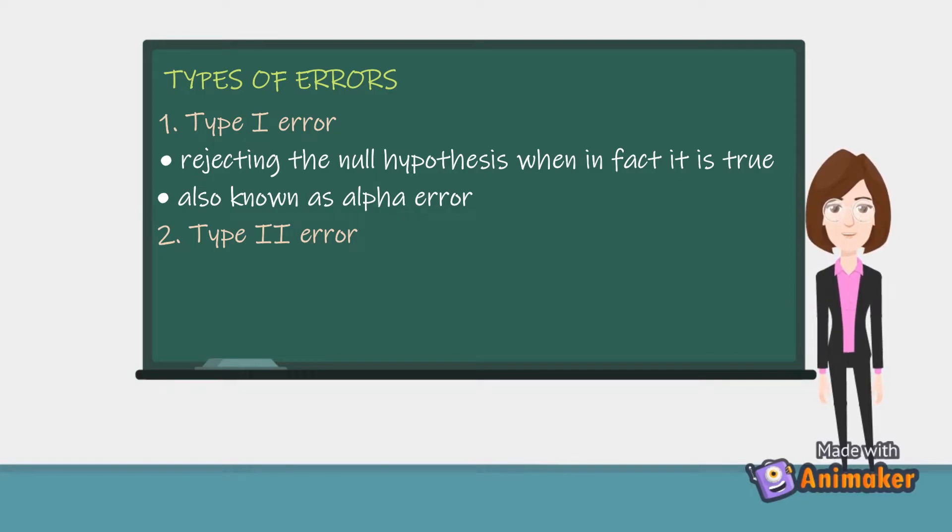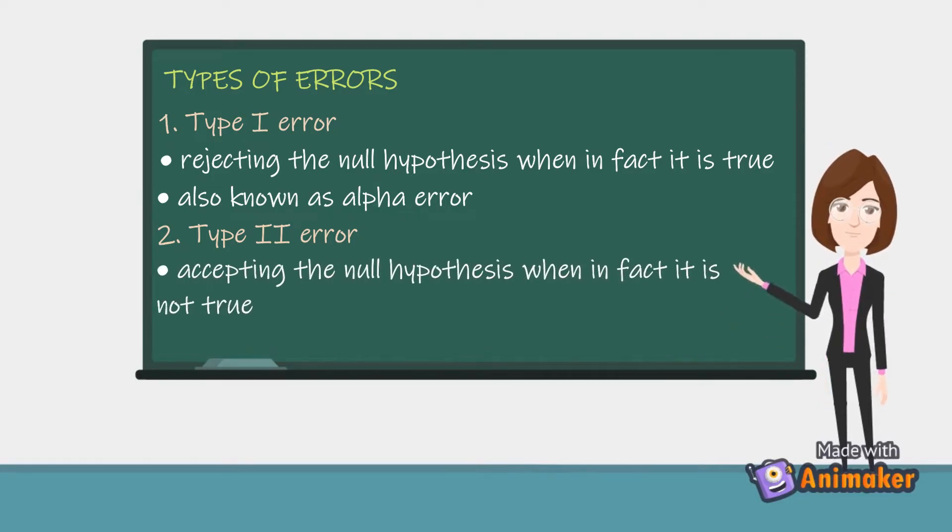On the other hand, type 2 error happens when the null hypothesis is accepted when in fact it is not true. It is also known as beta error.